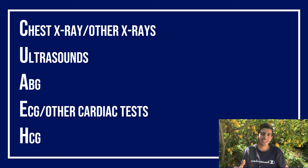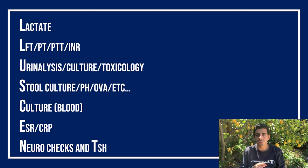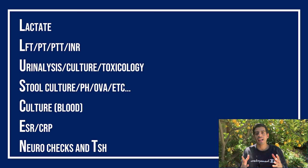HCG is something you'll probably forget — I do it for any female of reproductive age, roughly between 15 and 45. The first L is lactate, the second L is LFTs, and with LFTs I also go for PT, PTT, and INR. U is urine analysis, urine culture, or urine toxicology screen. S is stool. C is culture — blood cultures — especially for any patient coming with a fever. E is ESR/CRP. N is neurotrex for any patient with altered sensorium. And T is TSH. I don't apply this to every patient — it's a reminder for easily forgotten tests you should tailor to certain patients.